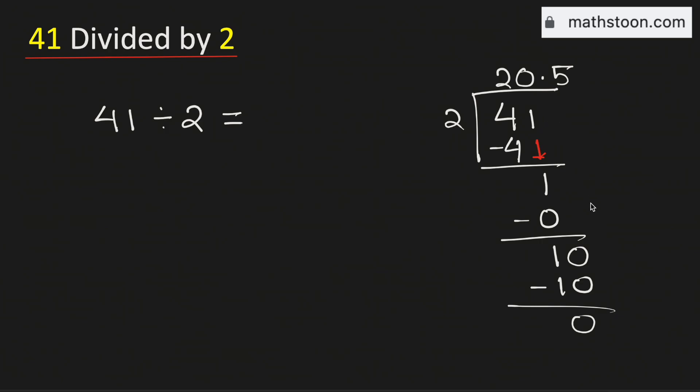As there is no number to bring down here and we have obtained the number 0, so we will stop. Therefore, 41 divided by 2 is equal to 20.5.